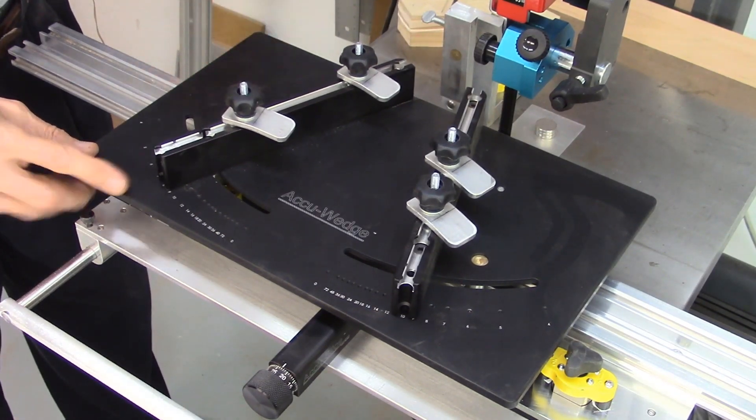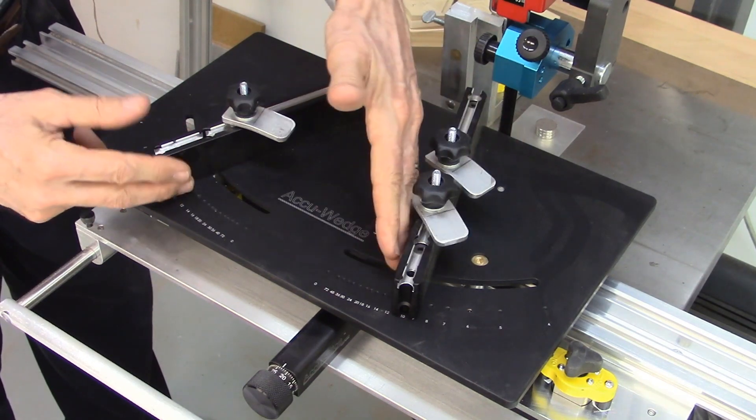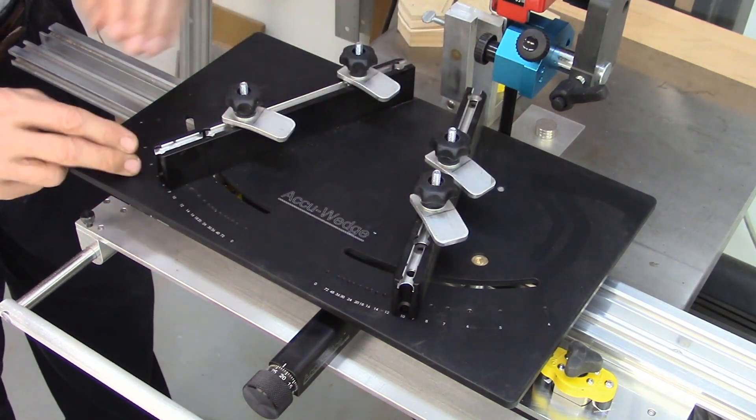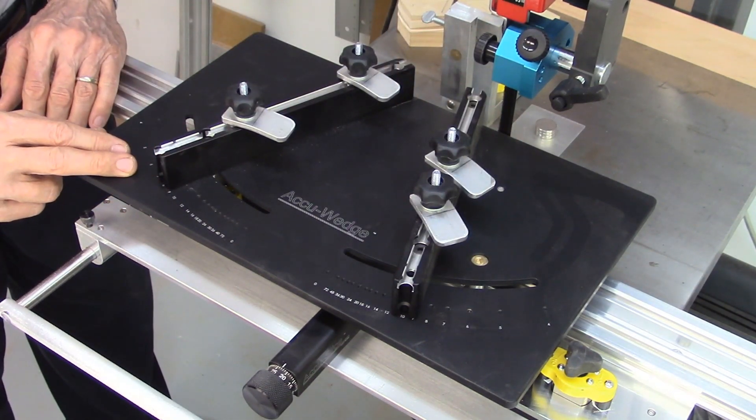The AccuEdge uses the principle of two fences with an accurate angle set between the two fences. A similar technique has been used with wedges in the past on a table saw. However, with the AccuEdge, there's no need for the wedges.